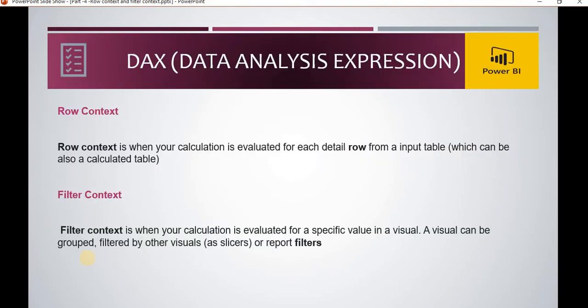Row context is when a calculation is evaluated for each individual row from our input table. In a calculated column, any calculation you put is computed based on every row. So row context is essentially that methodology — when we create a calculated column, it performs that calculation over each and every row, calculating over the particular filter for each row.